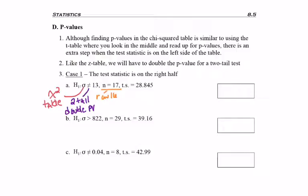I'll be going to row n minus 1, so row 16, and I'll be looking for the test statistic in the table. When I go to row 16 and I look for 28.845, it's actually in the table—very rare, may only happen on a test. But that means I'm going to read straight up to 0.025.